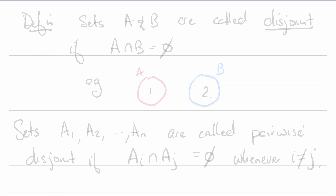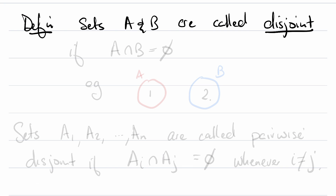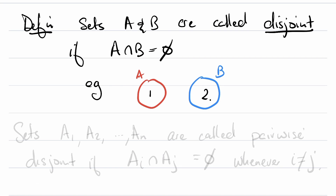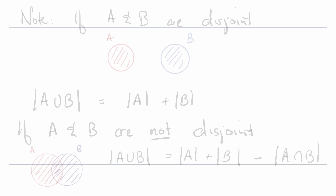Before we move on, there are a few things I'd want to note specifically about the intersection. Definition: sets A and B are called disjoint if the intersection of A and B is the empty set. A simple example is when your sets A and B have nothing in common. You can generalize this: sets A₁, A₂, ..., Aₙ are called pairwise disjoint if the intersection of any two of them is the empty set whenever they're different.